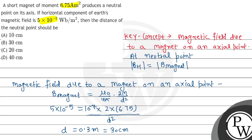So the distance of the neutral point should be 30 centimeters. Option B is correct. Hope this answers your question, thank you.